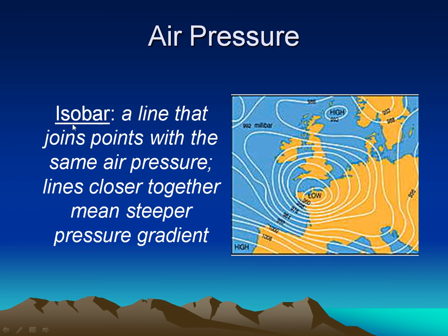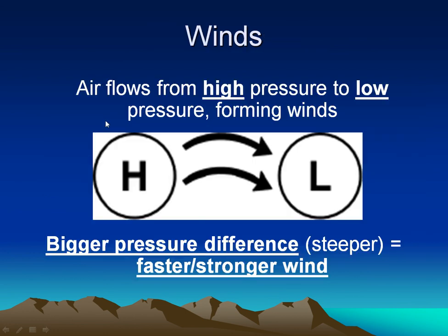These lines are called isobars. Iso means same, and bar is short for barometric pressure. Wind flows from a high pressure to a low pressure — just like a toothpaste tube. You put a lot of pressure on one side and it goes out the other: high to low. The bigger the difference in pressure — the harder you push on one side compared to the other — the faster the wind will blow, or the faster the toothpaste squirts out of that tube. Less of a difference means less wind.